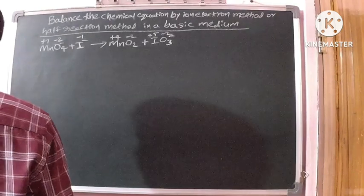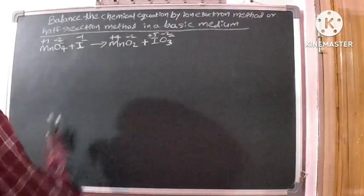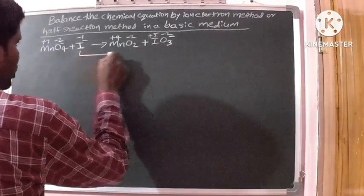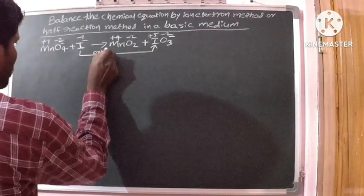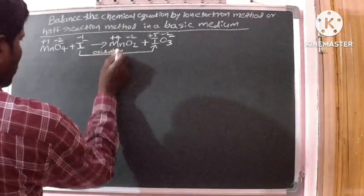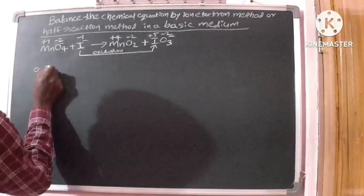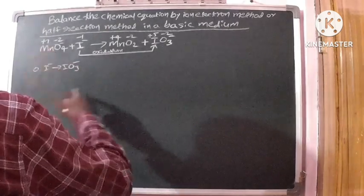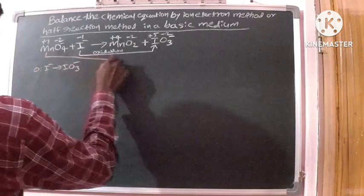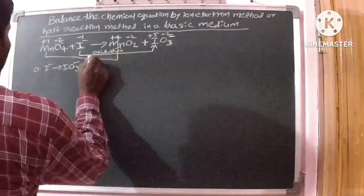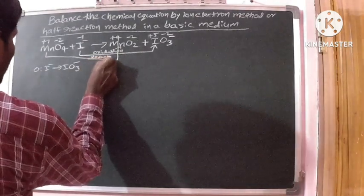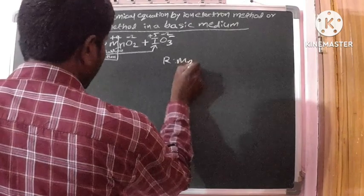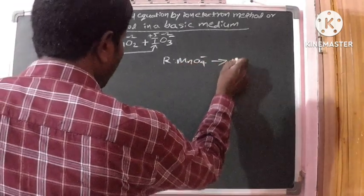In the ion-electron method, one reaction is divided into two half reactions, which are then balanced and added together. In this equation, iodine changes from minus 1 to plus 5, so iodine is being oxidized. Therefore, the oxidation half reaction is: I⁻ gives IO3⁻. Manganese changes from plus 7 to plus 4, so manganese is being reduced. Therefore, the reduction half reaction is: MnO4⁻ gives MnO2.